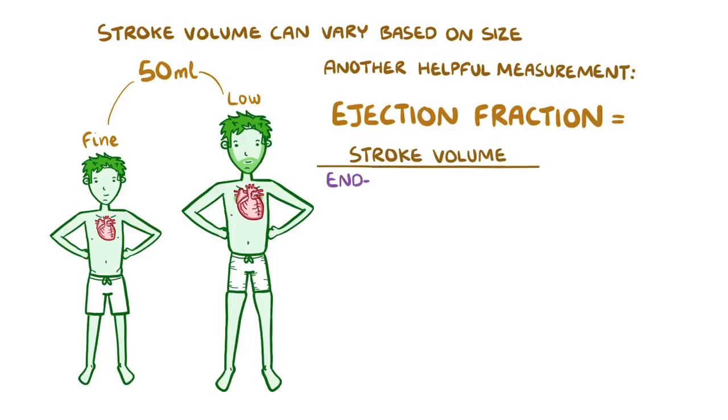So another helpful measurement is the ejection fraction, which is the stroke volume divided by the end-diastolic volume. In a normal individual, that's 70 divided by 120, or about 58 percent, but it can fluctuate between 50 and 65 percent and still be considered normal.